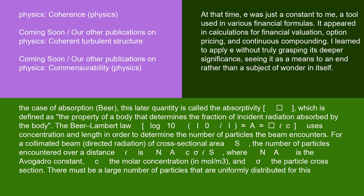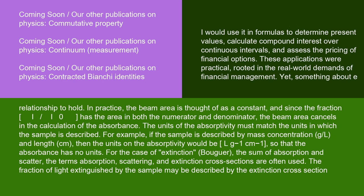There must be a large number of particles uniformly distributed for this relationship to hold. In practice, the beam area is thought of as a constant, and since the fraction I/I₀ has the area in both numerator and denominator, the beam area cancels in the calculation of the absorbance. The units of the absorptivity must match the units in which the sample is described. For example, if the sample is described by mass concentration g/L and length cm, then the units on the absorptivity would be L g⁻¹ cm⁻¹, so that the absorbance has no units.